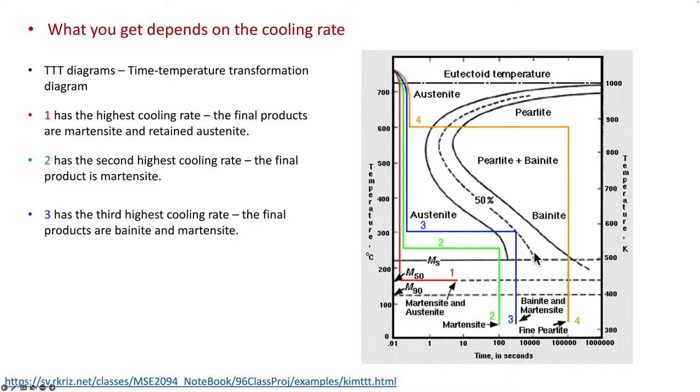After that, the temperature further drops sharply. And the retained austenite will phase transform into martensite. So we have 50% bainite and 50% martensite.